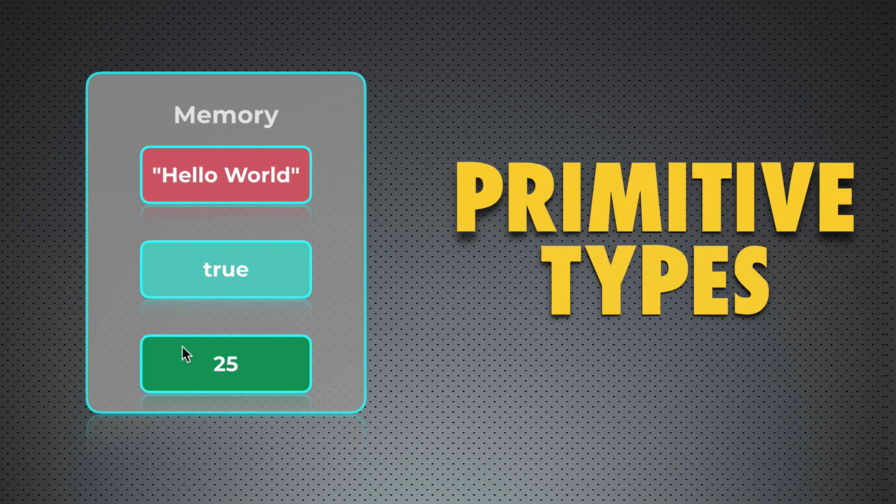Same with number. It is number primitive type. And in this example, it is simply 25. And again, it is stored in the memory directly. That's how values of primitive types are stored in the memory in JavaScript.